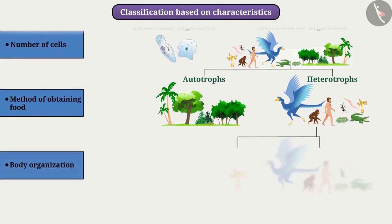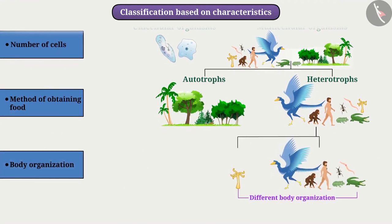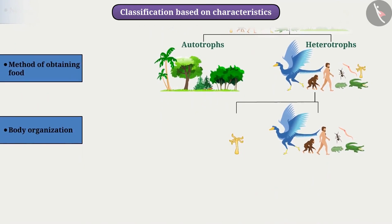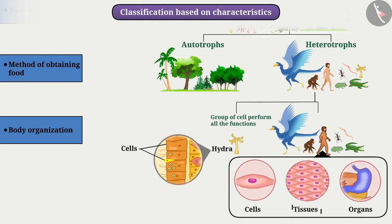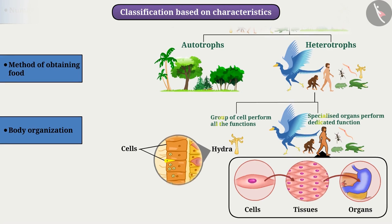Body organization: different organisms have different body organization. In simple organisms such as hydra, a group of similar types of cells perform all the functions. Whereas in humans, tissues are formed from cells, and organs are formed from tissues, and specialized organs perform dedicated functions. Classification of organisms can also be done on this basis.